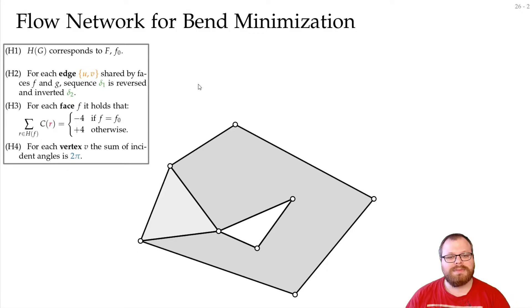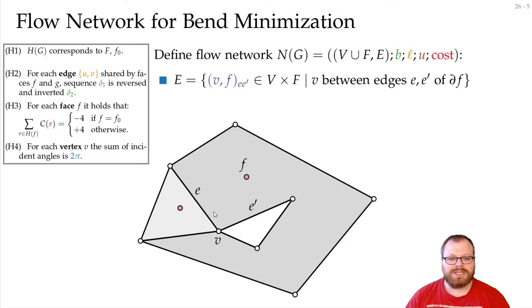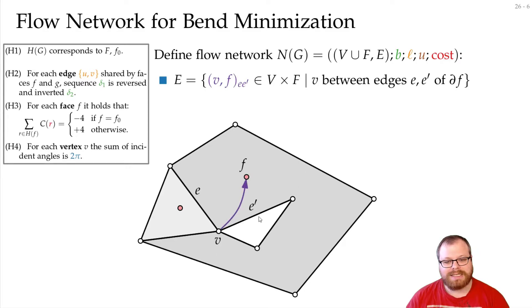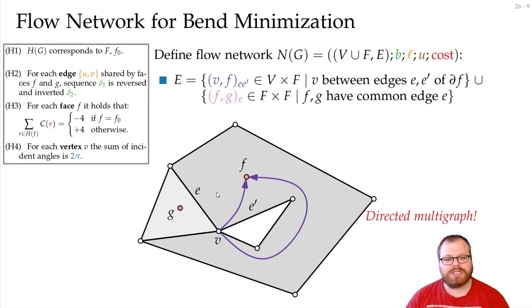Looking at an example: we have an outer face and three inner faces, and we define a flow network on this. The vertex set of the flow network consists of all vertices and all faces. We have edges from a vertex to a face if the vertex lies at that face — more precisely, between edges E and E' on that face — so we get a directed multigraph, not a simple graph. This is important because a vertex can contribute multiple angles to the same face. Between two faces that share an edge, we also have directed edges in both directions.